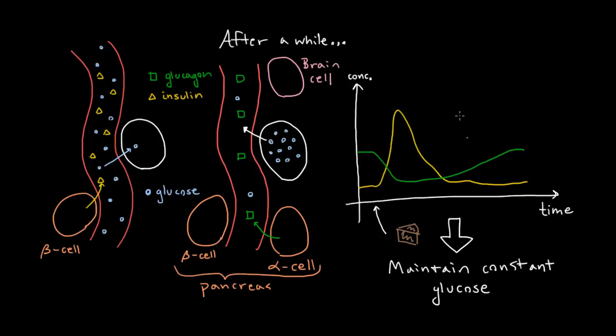So basically what these two hormones are going to do is they're going to take this chocolate cake and take all the glucose in it and spread that glucose over time throughout the body.